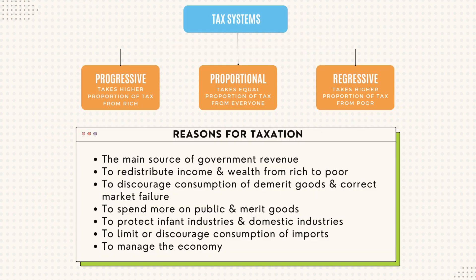There are three kinds of tax systems: progressive, proportional and regressive. Progressive taxation is a tax system that deducts a larger proportion of income as tax as a person's income level increases. Proportional tax is a tax system that deducts the same proportion of tax at all levels of income. Regressive taxation is a tax system that deducts a smaller proportion of tax as a person's income increases. Essentially, regressive tax takes a higher proportion of tax from the poor, whereas progressive tax takes a higher proportion of tax from the rich.